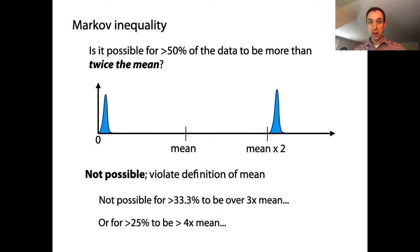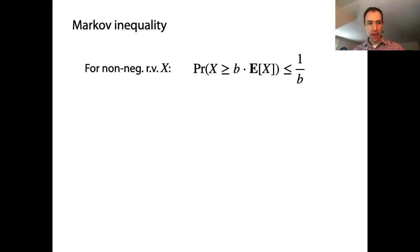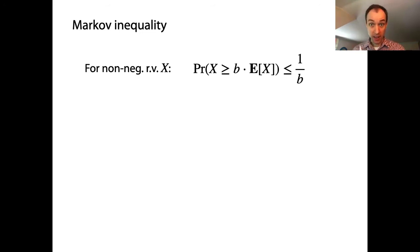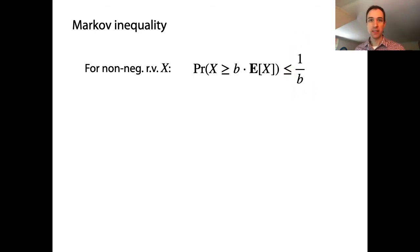Let's go to the equation for Markov's inequality, which says that for a non-negative random variable X — you can think of this as representing the data set — the probability that a value from the data set is greater than or equal to b times the mean, b times the expected value, is at most 1/b. That's like saying the fraction of data points greater than b times the expected value is at most 1/b.